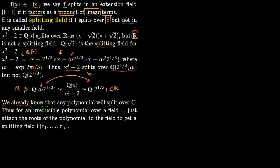We already know that any polynomial will split over the complex numbers — this is known from analysis. So for any irreducible polynomial over a field F, to get a splitting field you simply adjoin the roots of the polynomial to the field. If the roots are r₁, r₂, …, rₙ, then adjoining them to F gives you the splitting field.